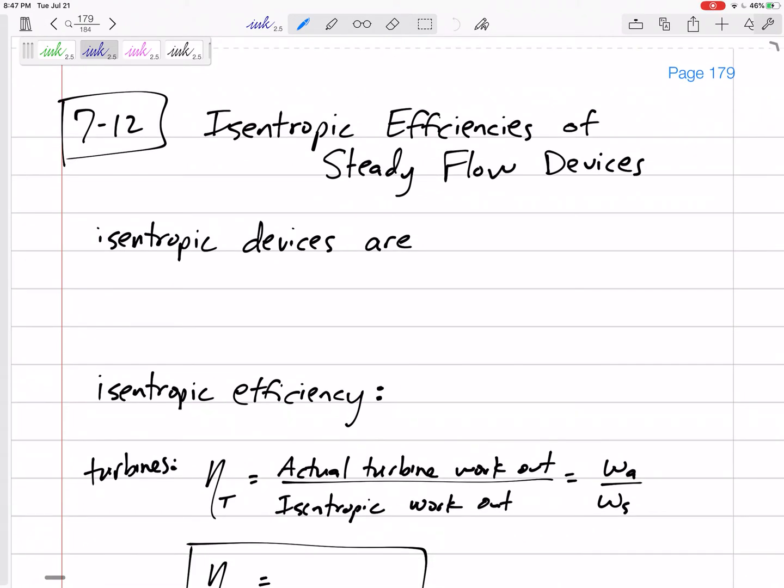Chapter 7, section 12: isentropic efficiencies of steady flow devices. We've been talking about entropy all this chapter, and now we're discussing isentropic processes, where entropy is constant.